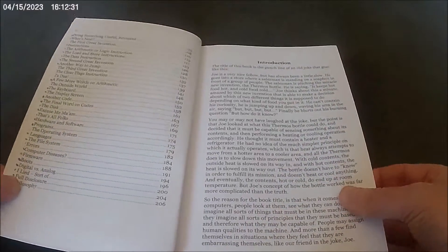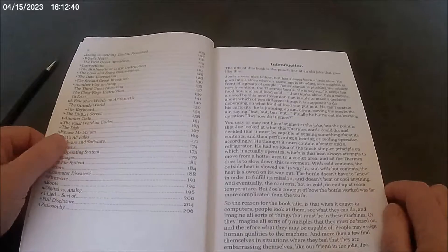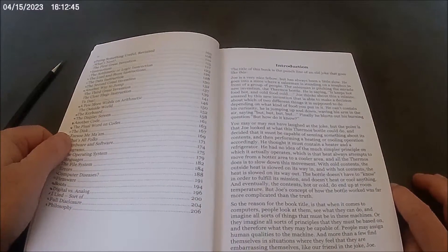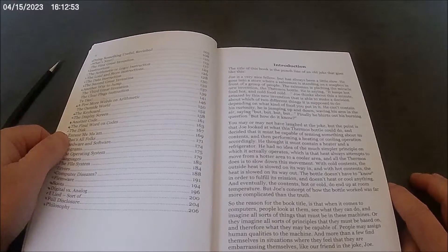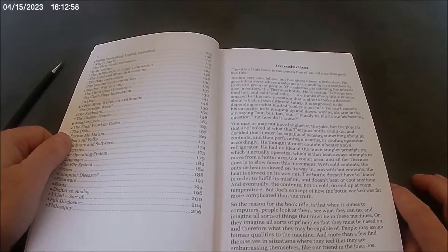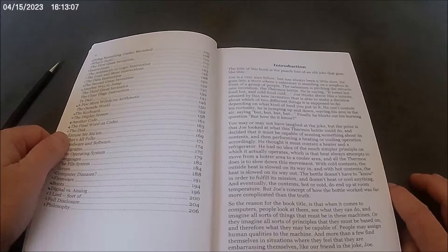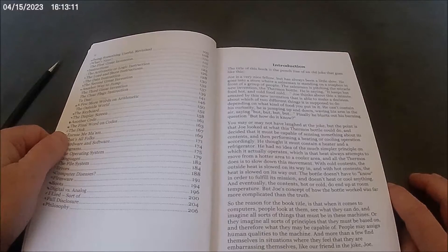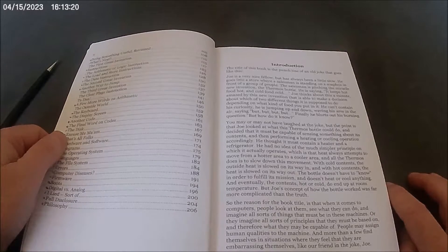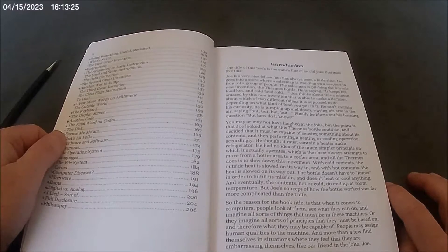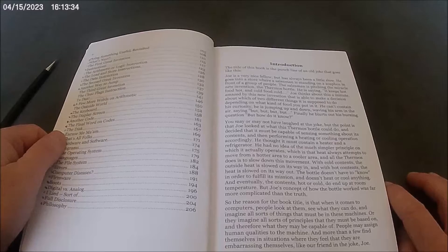Now what I will do is I will actually read the first paragraph here, just to give you an idea of the writing style of the author. So the title of this book is the punchline of an old joke that goes like this: Joe is a very nice fellow but has always been a little slow. He goes into a store where a salesman is standing on a soapbox in front of a group of people. The salesman is pitching the miracle new invention, the thermos bottle. He is saying it keeps hot food hot and cold food cold. Joe thinks about this a minute, amazed by this new invention that is able to make a decision about which of two different things it is supposed to do depending on what kind of food you put in. He can't contain his curiosity, he's jumping up and down waving his arm in the air saying but, but, but. Finally he blurts out his burning question: but how do it know?